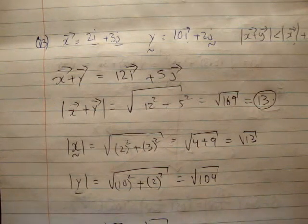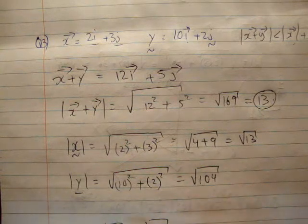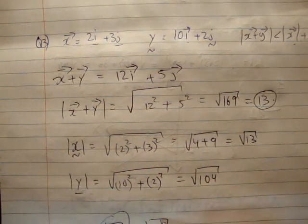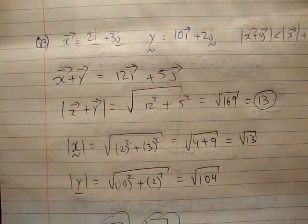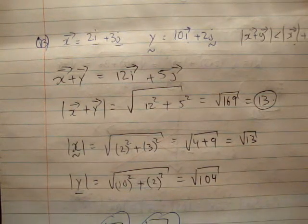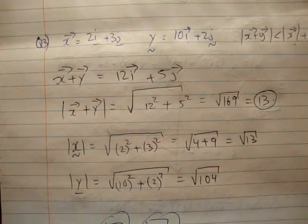You can do that in your calculator if you like, but if you just look at it, this is quite small, this is approximately 10, so 13 minus 10 minus something small is greater than 0.